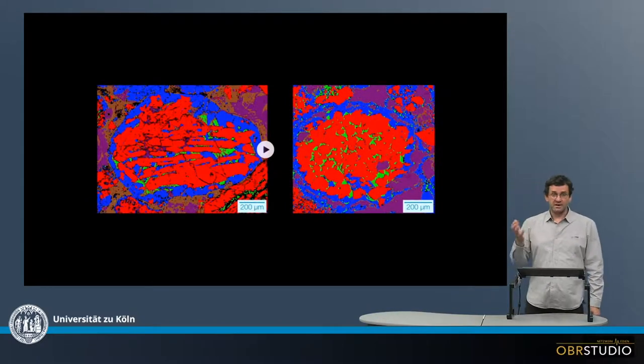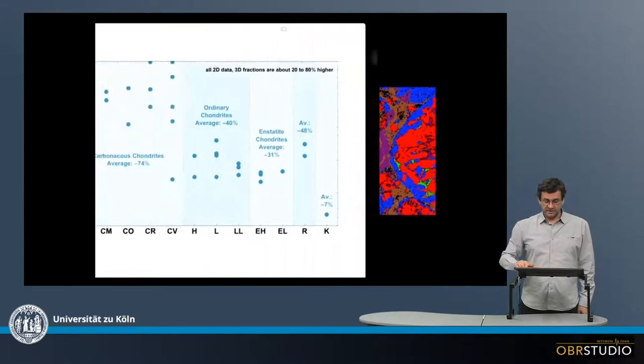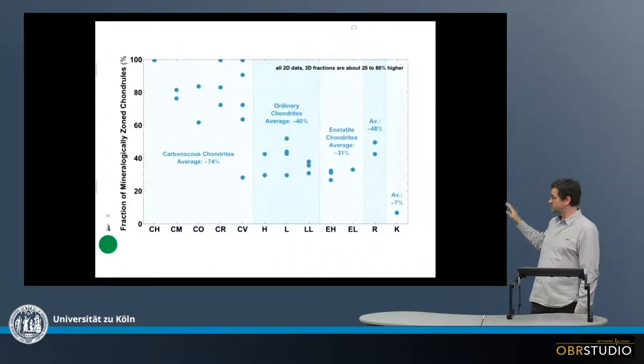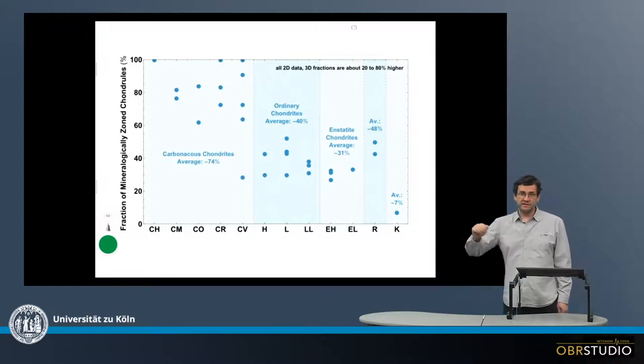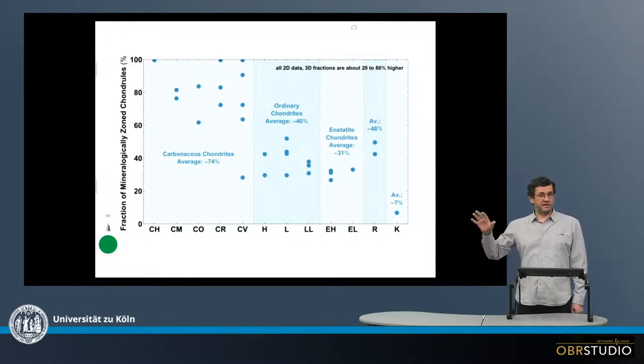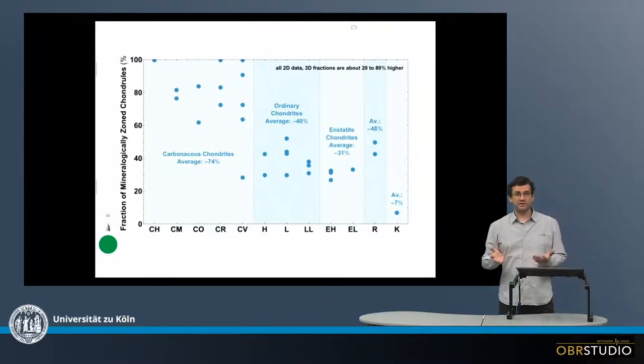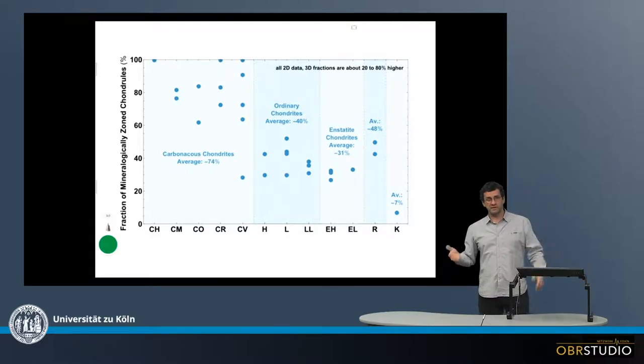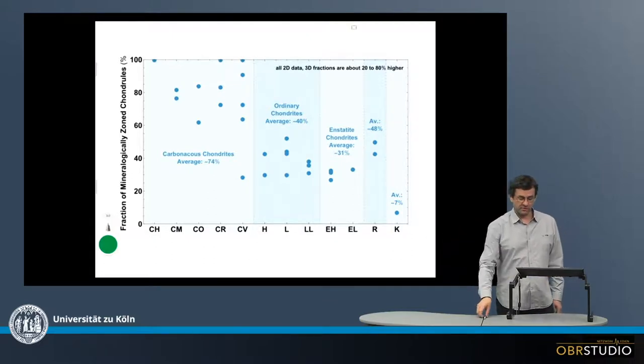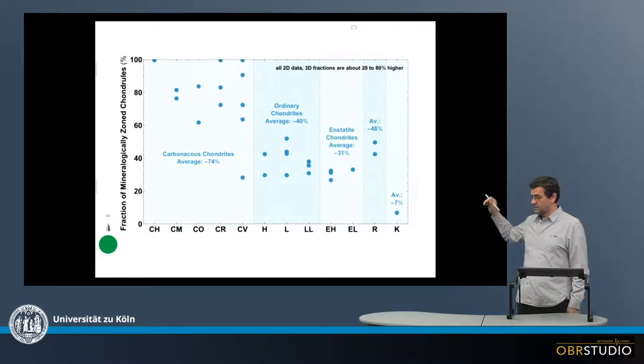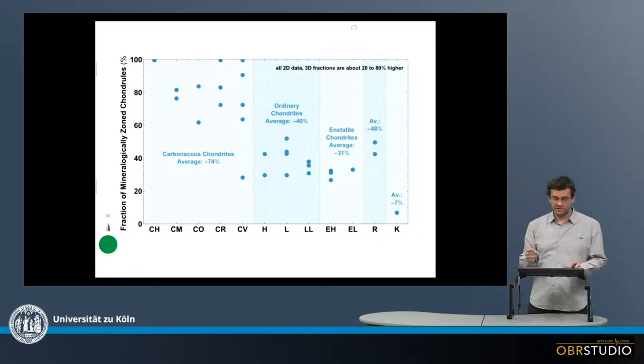Now the question is how many of these zoned chondrules exist. And this is shown in this plot here. This is a category plot with the x-axis being the various categories, in this case the chondrite groups. On the y-axis is the fraction of zoned chondrules among all chondrules in a chondrite. And we can immediately see a couple of differences but also similarities.